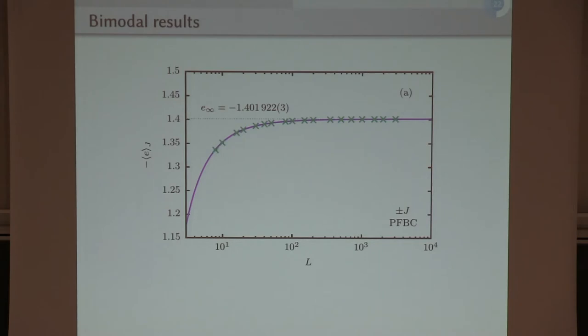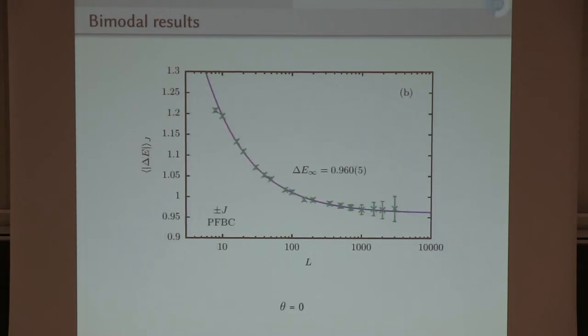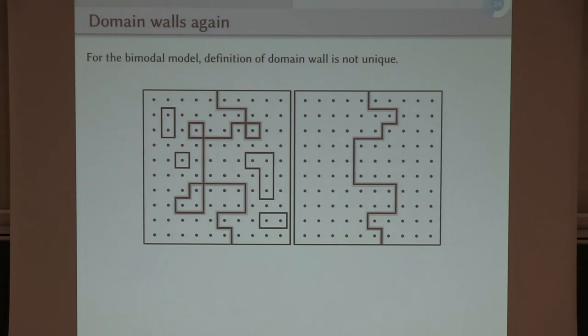Okay, then we can study the behavior of the bimodal model. Of course, the average energy is not affected because that's the same for all the ground states. We can look at the behavior of the stiffness of the defect energy. The settling down to constant value implying that theta is zero, that is unaffected. But what is affected is the question of the length of the domain wall.